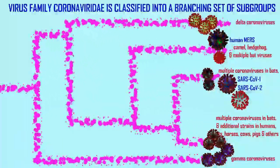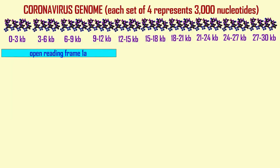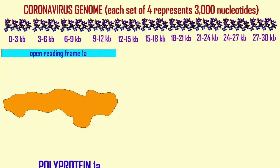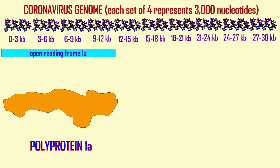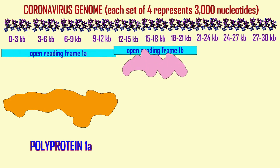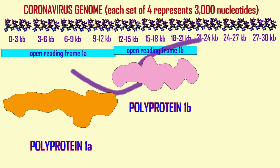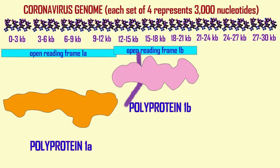Their genomes all have the first two-thirds contributing to two large polyproteins produced from two open reading frames. These polyproteins are largely responsible for replicating the virus genome — making multiple copies so multiple virus particles can be made — and transcribing the viral RNA to make mRNAs from which proteins will be made. So the first two-thirds of coronavirus genomes are responsible for making more virus RNA and transcribing it so that proteins can be made.